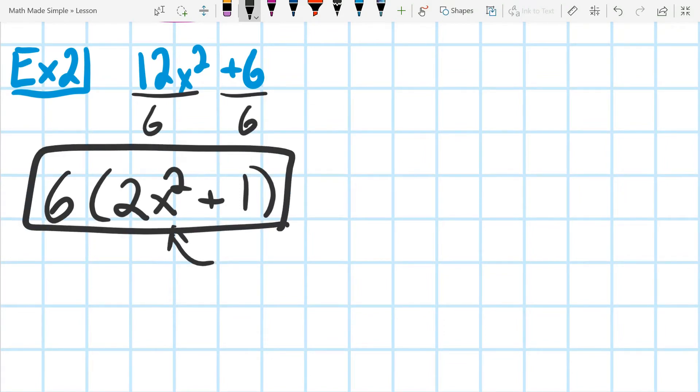When we're factoring out the greatest common factor, it doesn't mean it's going to look simpler, it's actually going to look more complicated many times, because we're actually making it, we're adding parentheses, and we're making more things. There was only two terms here, but now there's the 6 on the outside.